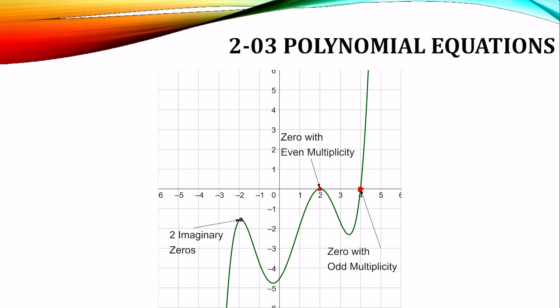If your graph touches the x-axis but doesn't cross, so it's a minimum or a maximum at the x-axis, that is a zero with even multiplicity, which means that the number is a zero twice or four times or six times.